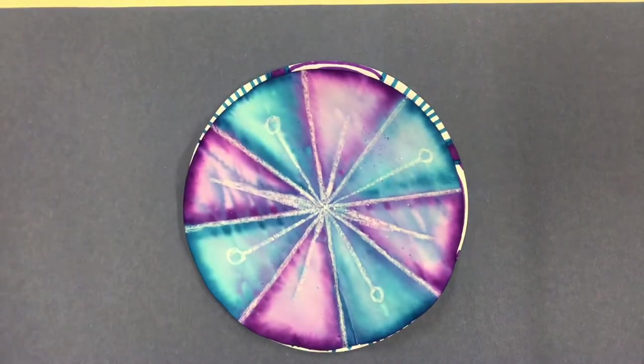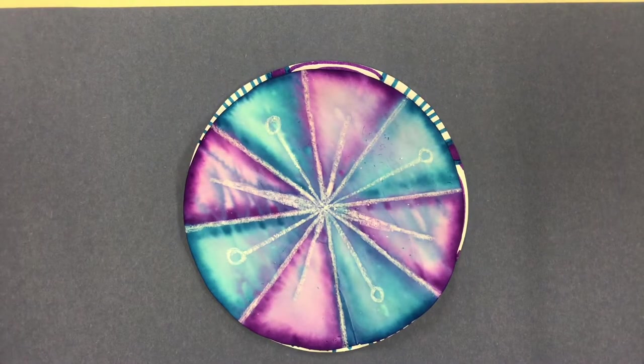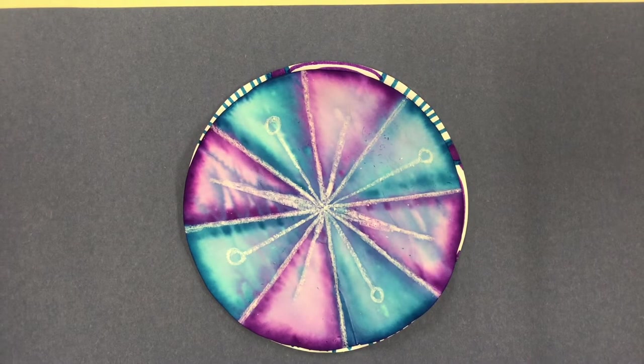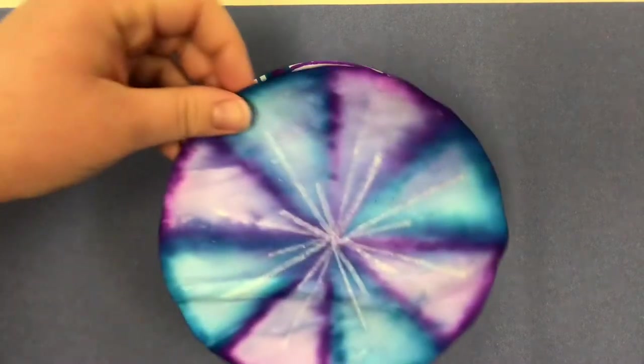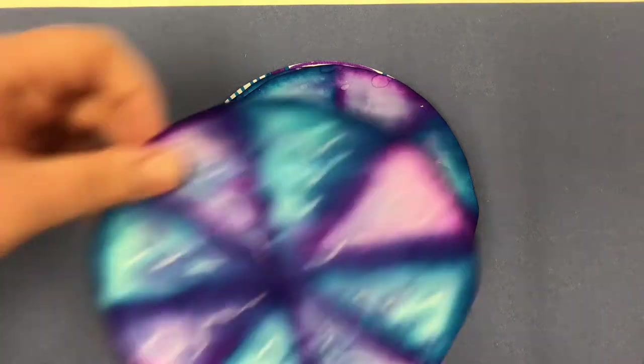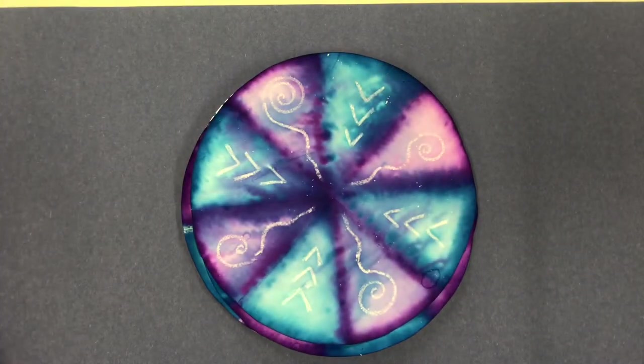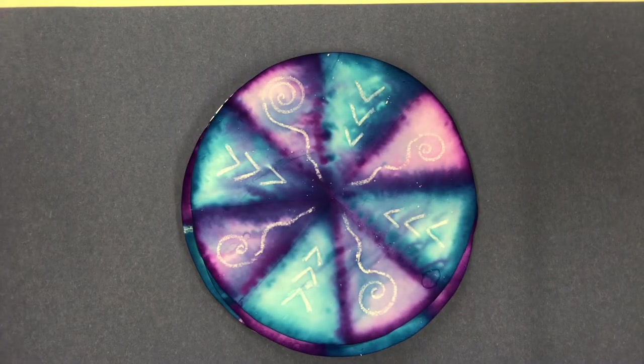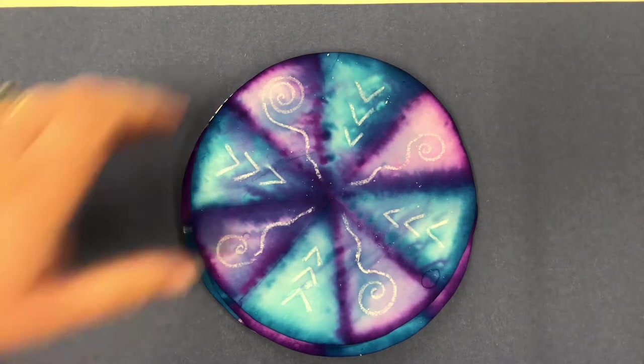Here's an example that was done with a marker watercolor painting technique, which I will teach you. Another one done with a marker watercolor painting technique. And one more done with that technique. All of them with radial balance, cool colors, lines, and shapes.